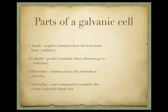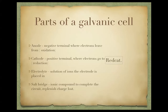The electrolyte is the solution that the electrodes are placed into — you have an electrode, which is the solid part, and the electrolyte, which is the solution. You also have the salt bridge, which is an ionic compound — basically paper or tissue soaked in something ionic — that completes the circuit and replenishes the charges that are lost. At the anode, electrons are leaving, so it becomes more positive, and negative ions from the salt bridge replenish it. A way to remember this is 'red cat': reduction happens at the cathode, and the cathode is the positive terminal.